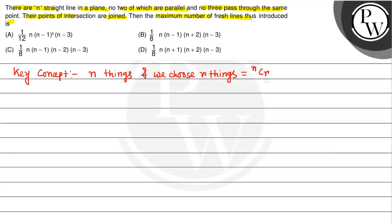And nCr formula is equal to n factorial divided by r factorial multiplied with n minus r factorial.